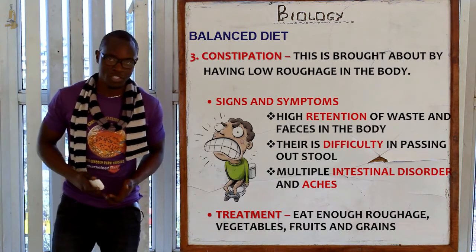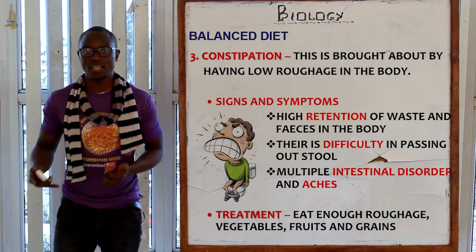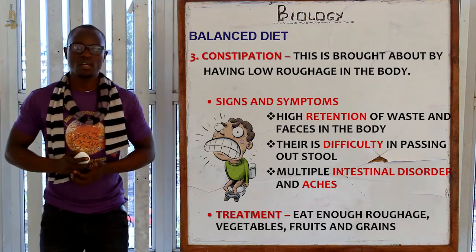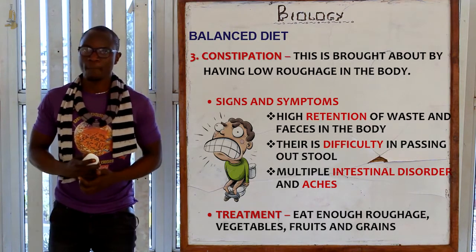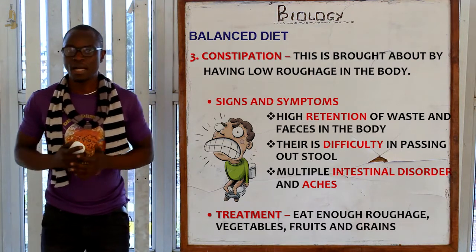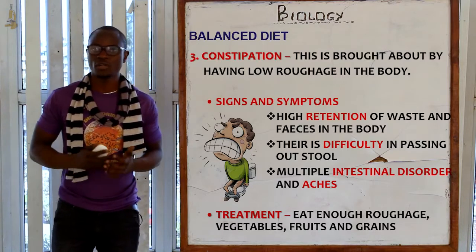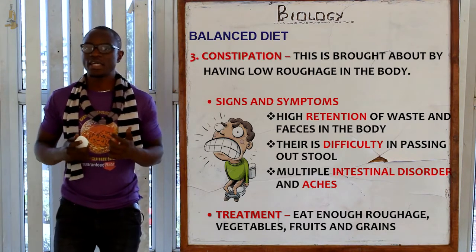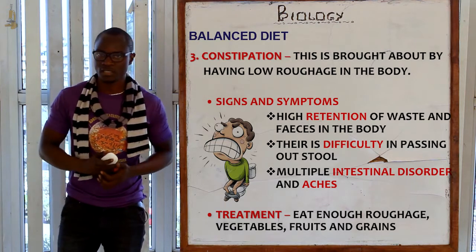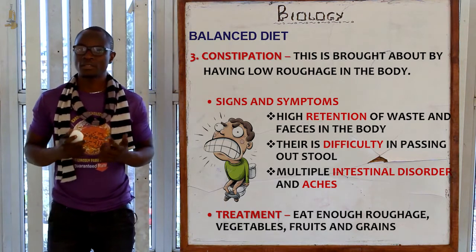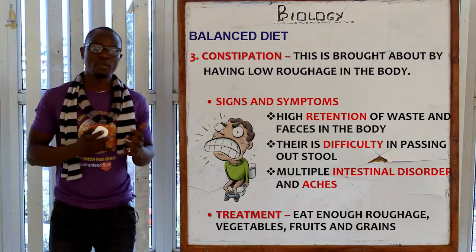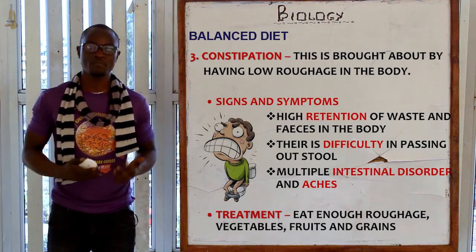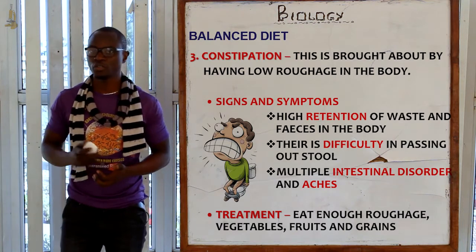The next disorder is constipation, which is brought about by low roughage in the diet. Signs and symptoms include retention of waste and feces in the body — the person may feel the urge to relieve themselves but nothing comes out. These people may also experience stomach ache or stomach upset, which is not necessarily caused by pathogens but rather by a diet lacking roughage.